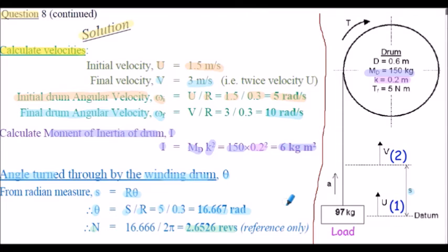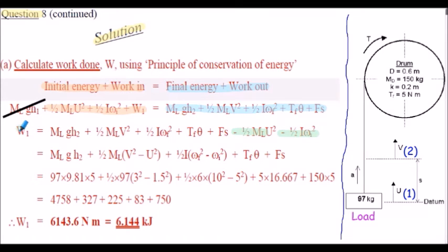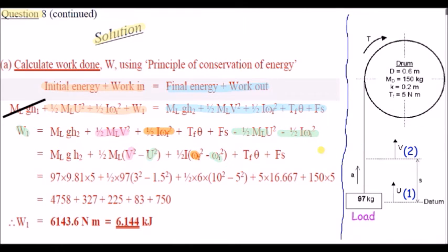Returning to the energy balance, the work into the system W1 is the subject. Factorizing the linear kinetic energy terms and the angular kinetic energy terms separately, then substituting all calculated values, the work done evaluates to approximately 6143.6 newton meters, or 6.144 kilojoules.